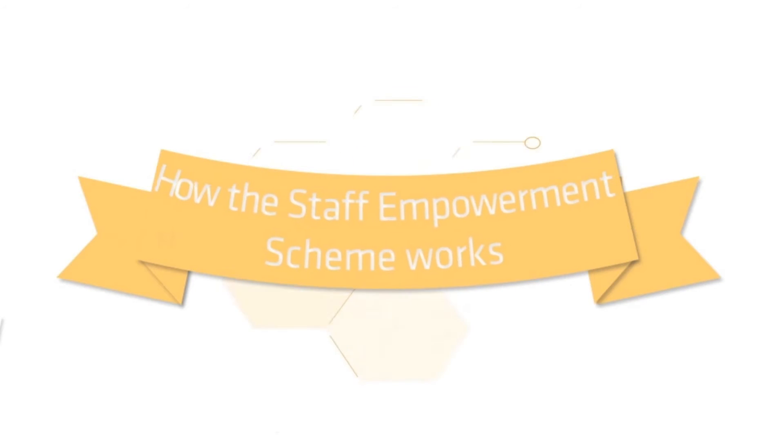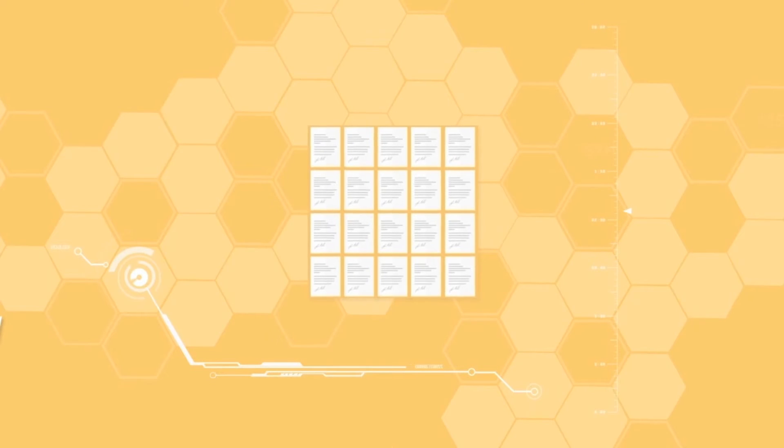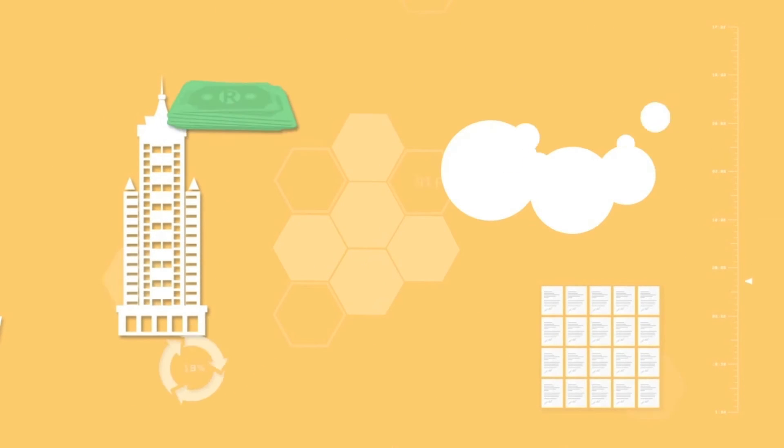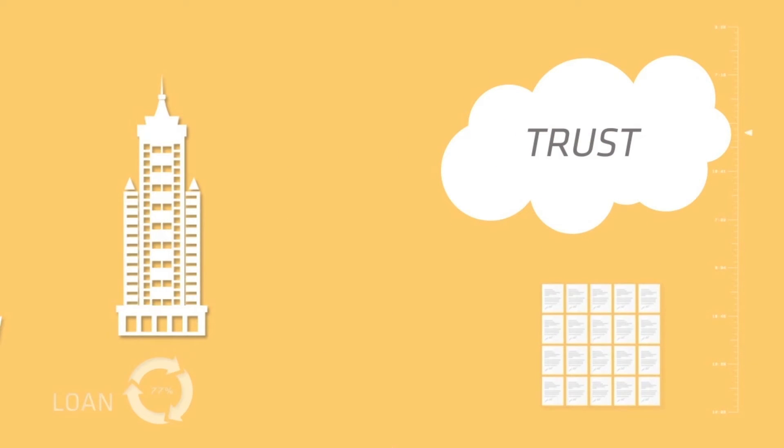This is how the staff empowerment scheme works. There are a fixed number of shares that are part of the scheme. When the scheme was created, the company loaned money to the trust to buy shares at the prevailing price.